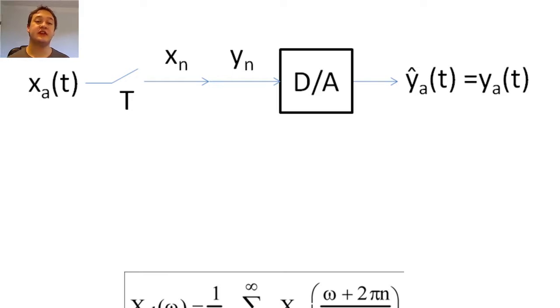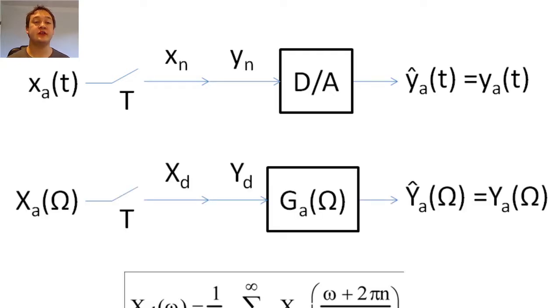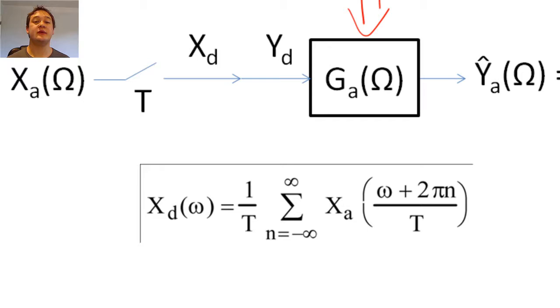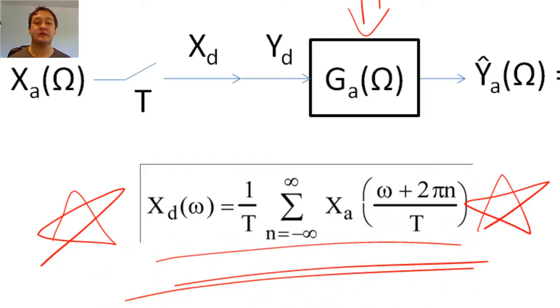It is easier to discuss the intricacies of sampling if we look at the frequency domain. Since we are using the frequency domain, we will also treat our D2A converter as an analog filter, g sub a of omega. We learned earlier that the discrete time Fourier transform is related to the Fourier transform according to the following formula. You absolutely need to be able to understand this formula and its implications.